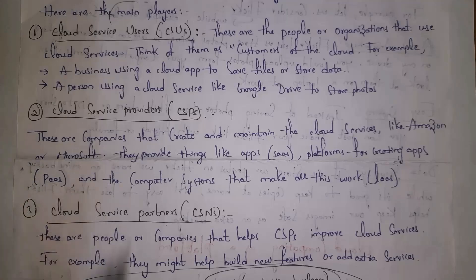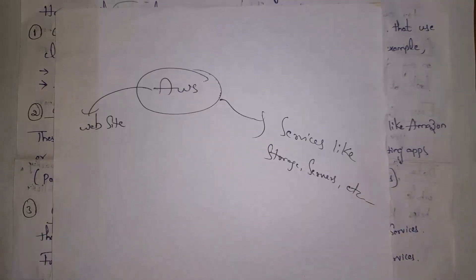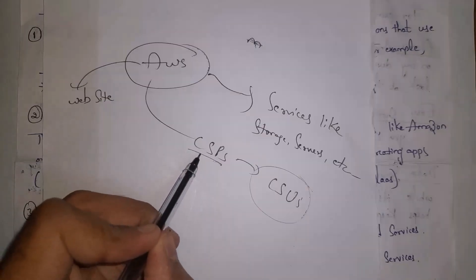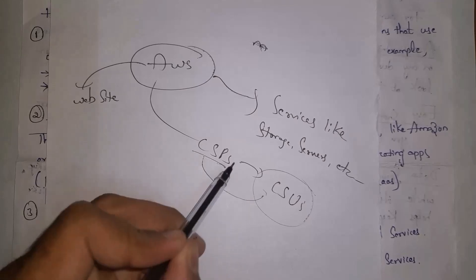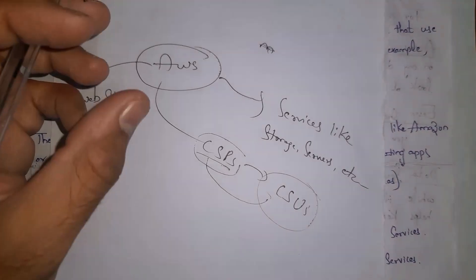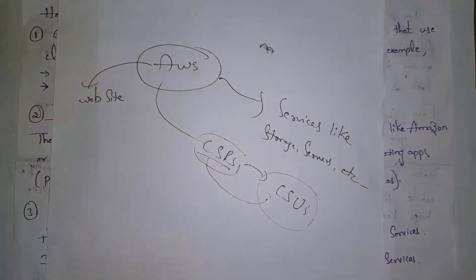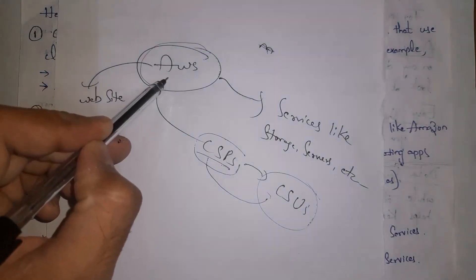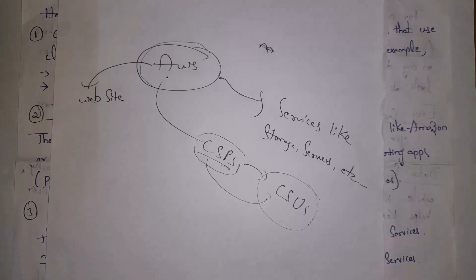The second player is cloud service providers. These are companies that create and maintain cloud services, like Amazon or Microsoft. For example, AWS is a cloud-based website developed by Amazon that provides various kinds of services like storage, software, hardware, and servers to cloud service users. AWS, Google, and Microsoft Azure are all cloud service providers because they provide services to cloud service users.